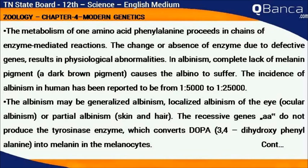In albinism, complete lack of melanin pigment causes the albino to suffer. The incidence of albinism in humans has been reported to be from 1 in 5,000 to 1 in 25,000. Albinism may be generalized albinism, localized albinism of the eye, or partial albinism in skin and hair. The recessive genes do not produce the tyrosinase enzyme, which converts DOPA into melanin in the melanocytes.